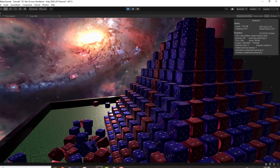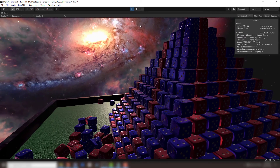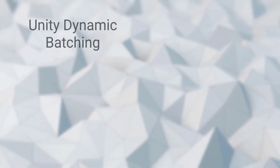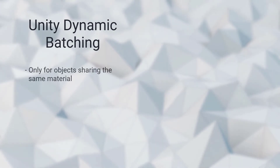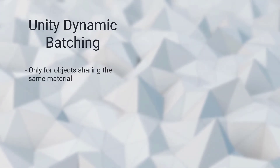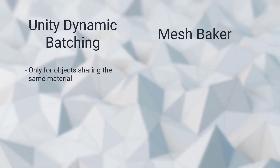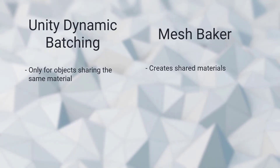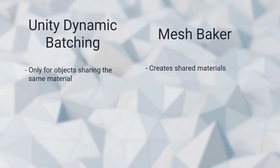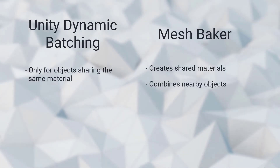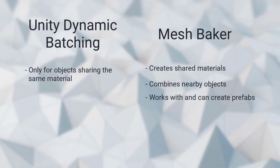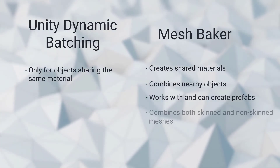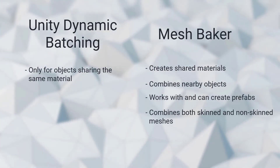By saving the GPU work, our project can run better and on less powerful devices. Unity already has built-in tools for batching draw calls, but they only work on objects that are similar. MeshBaker helps this by making dissimilar objects similar so they can be batched together, combining many meshes that are close together, modifying prefabs so that they can be batched easily too, and combining both skinned and non-skinned meshes.